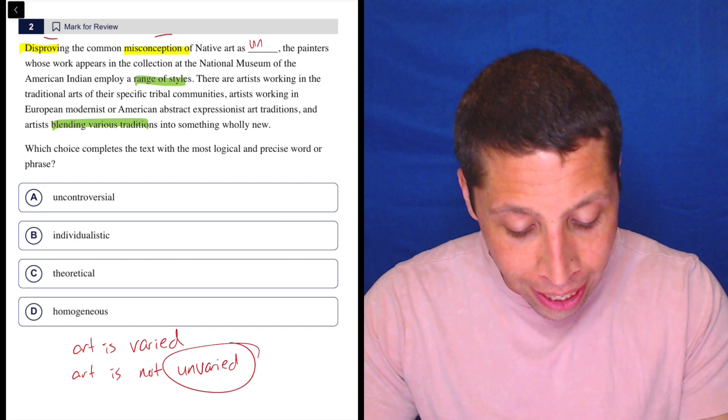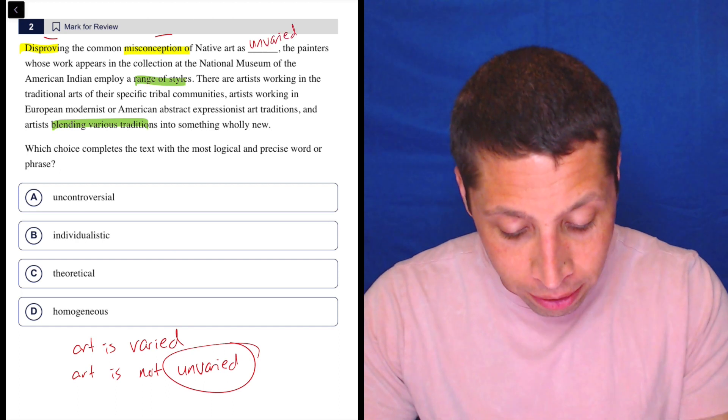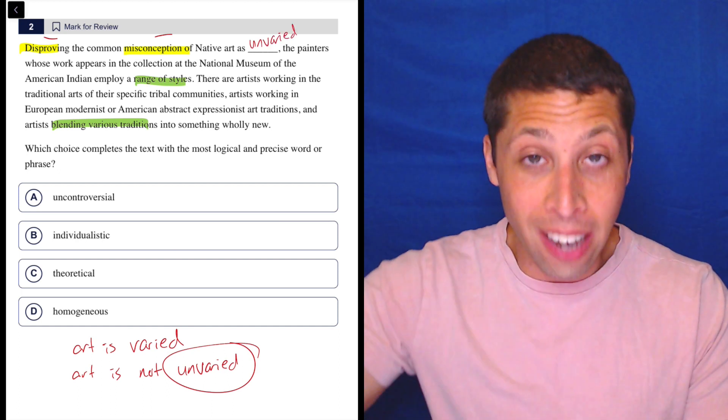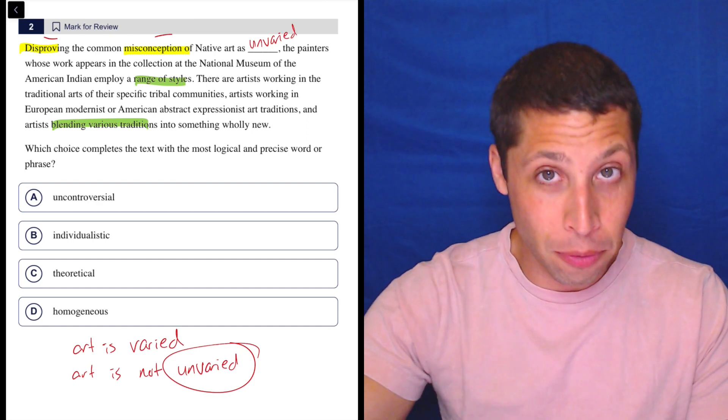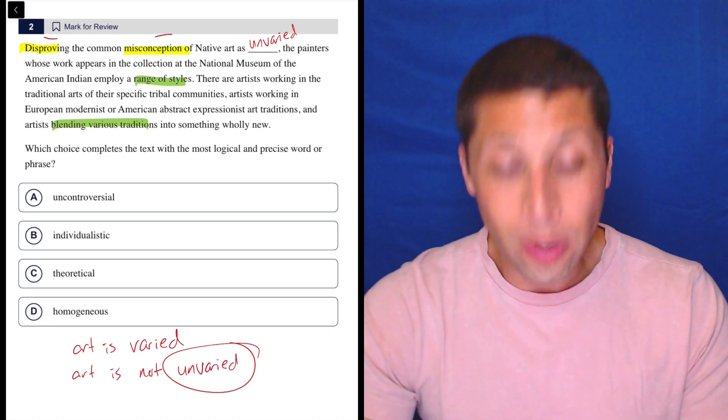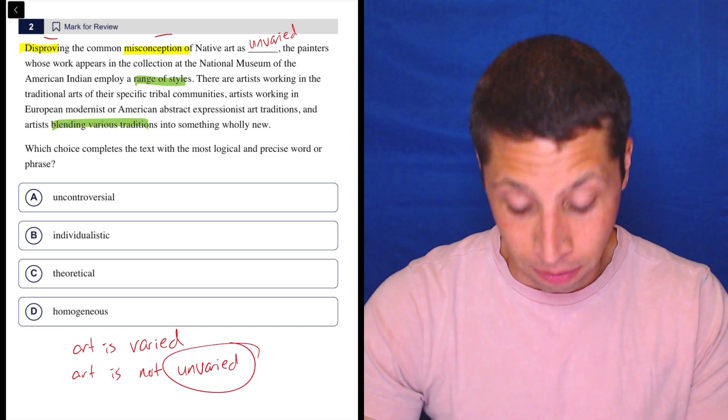So what we want for this blank is unvaried. They're disproving the idea that it's unvaried by talking about all these people who have a variety of styles. So, now we're just looking for a word that means unvaried.